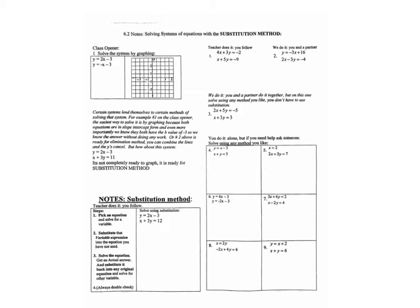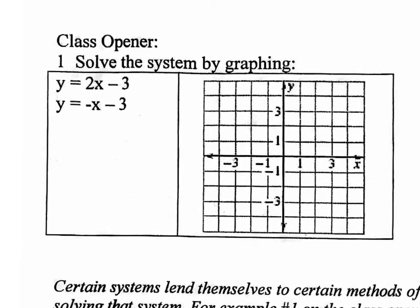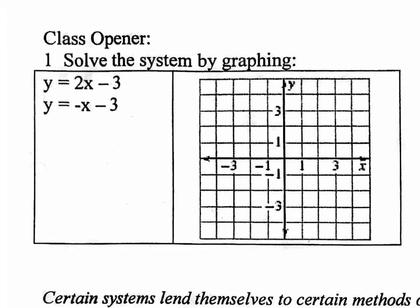So on today's lesson, 6.2, we're going to be solving systems with a different method, not just by graphing. The class opener is asking you to do what we already know how to do — solve by graphing. Let's take the top equation, already in slope-intercept form, and graph it in red, the bottom equation in blue, and find the point of intersection to get the answer.